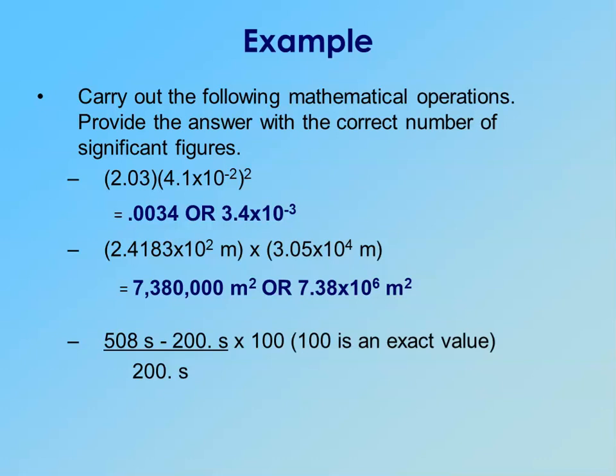The final example involves using both addition/subtraction and multiplication/division rules. We have to subtract before we can divide, so we take 508 minus 200 seconds to get 308 seconds. Neither measurement had any digits past the decimal, so we keep the 3, 0, and 8 — three sig figs determined by the addition/subtraction rule of decimal places. Then we divide 308 by 200, both following the multiplication/division sig fig rule with three sig figs. When we divide seconds by seconds, the units cancel, leaving a unitless number.